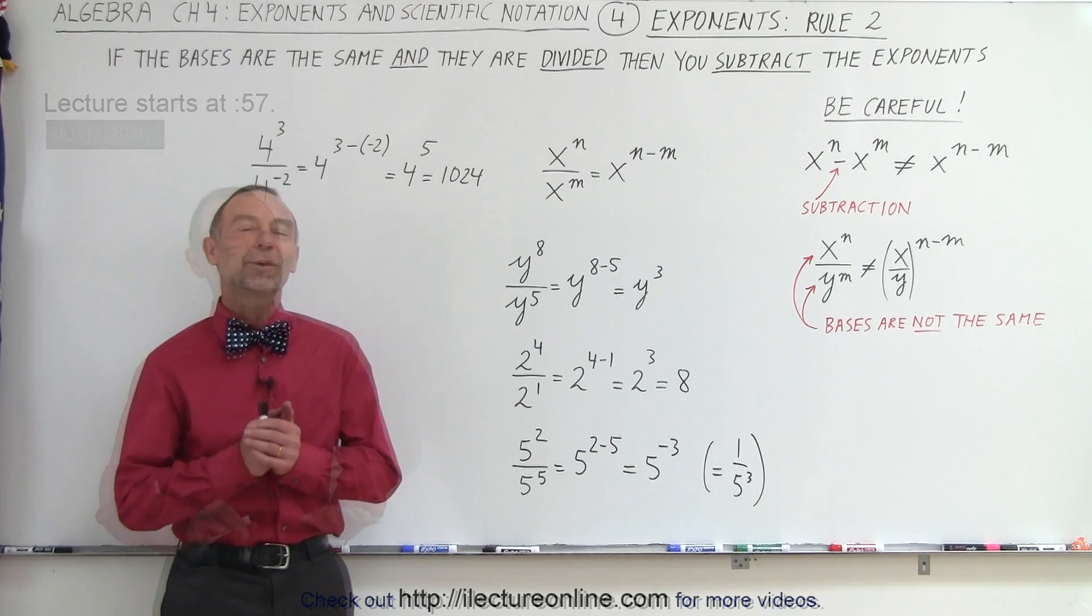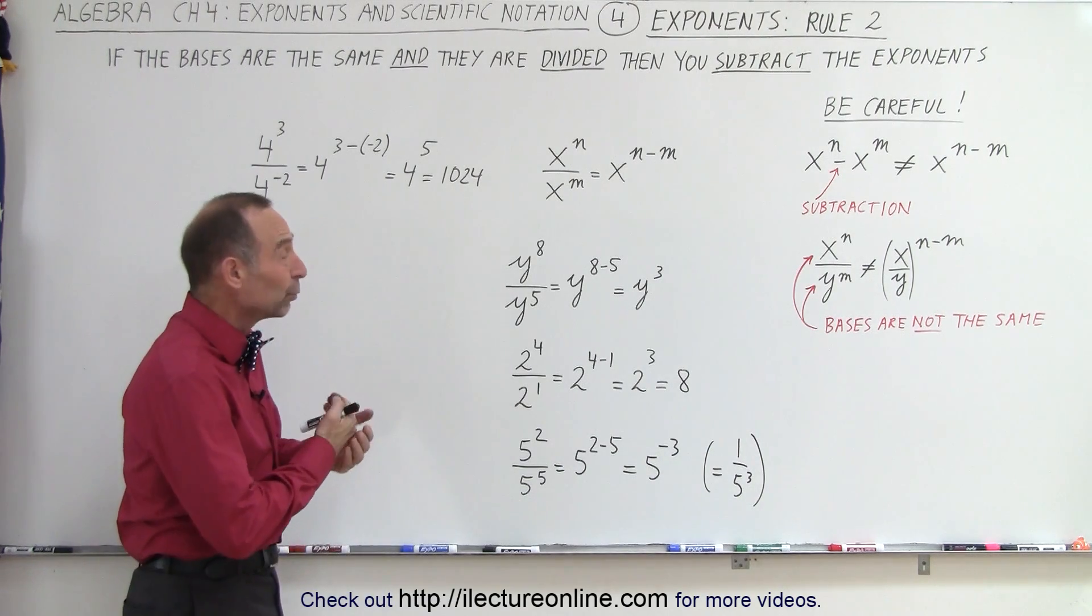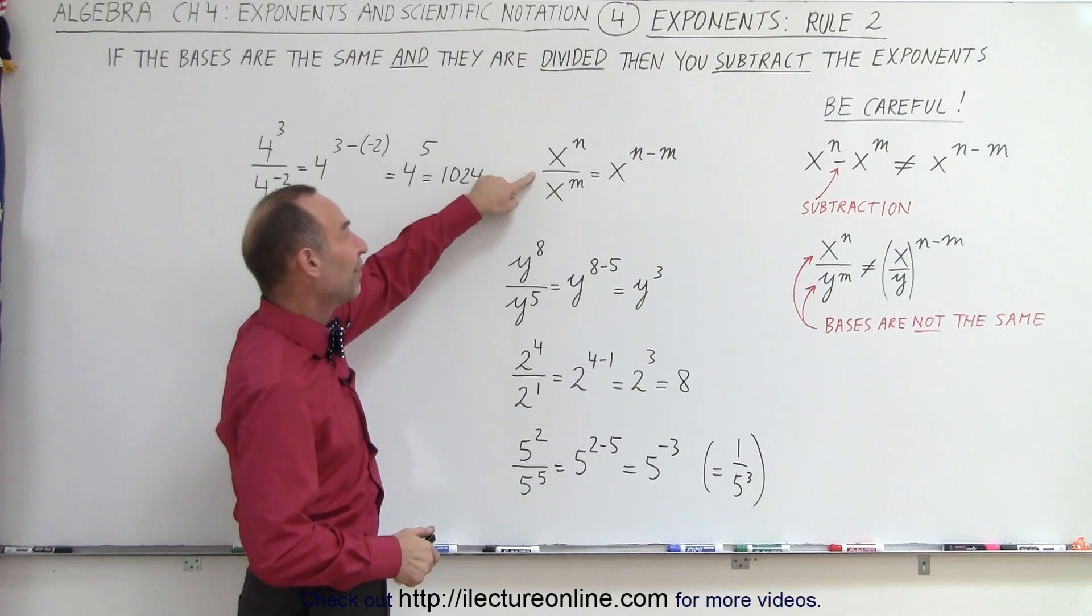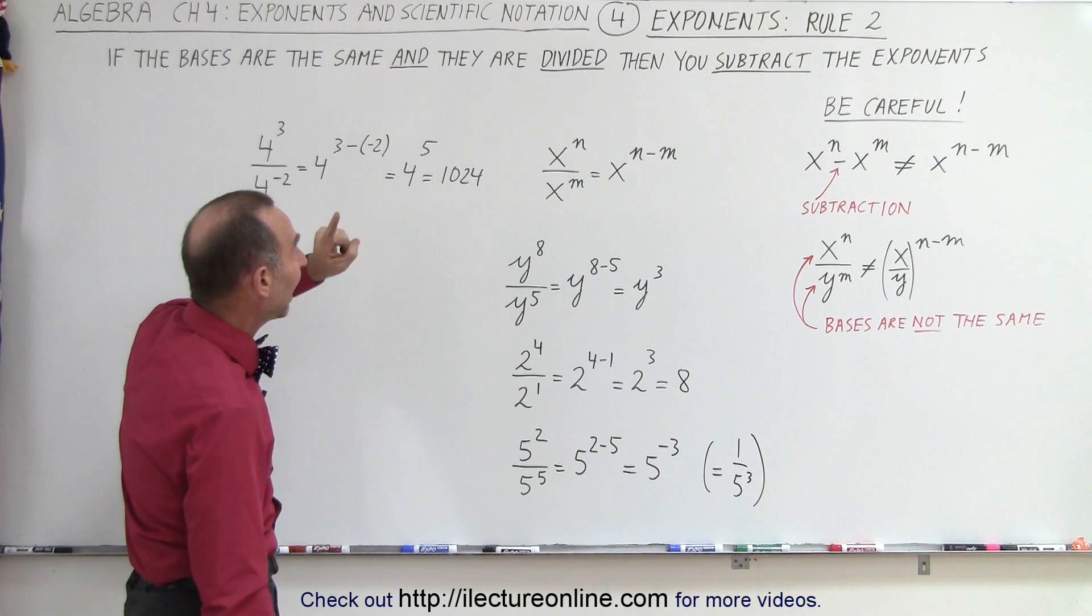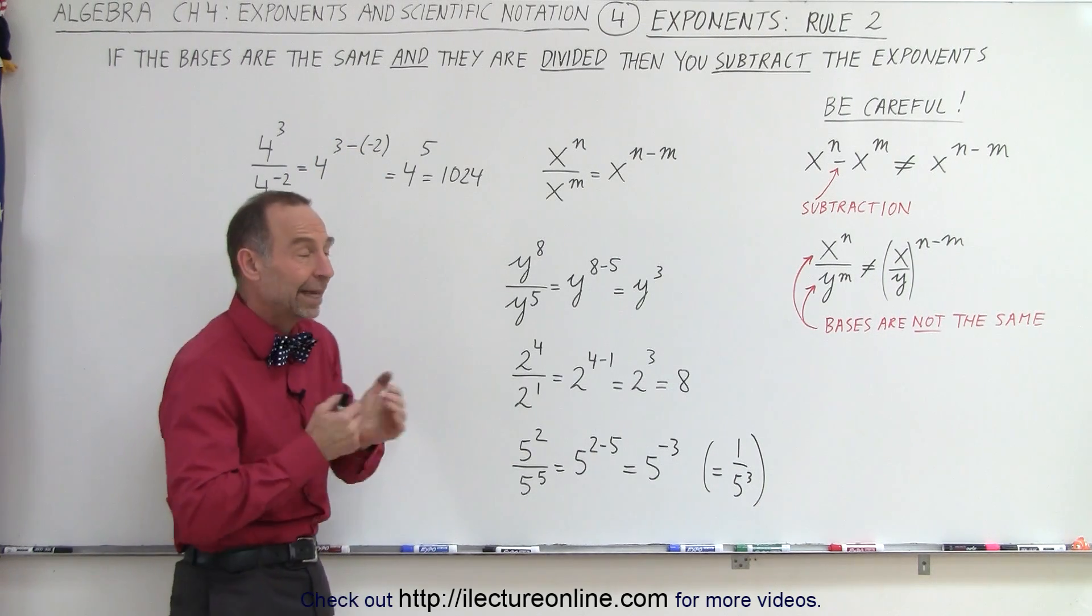Welcome to iLectureOnline. The second most important rule with exponents is the one where we divide one by the other. In other words, we have x to the n divided by x to the m. So the rule says that if the bases are the same and they are divided, then you subtract the exponents.